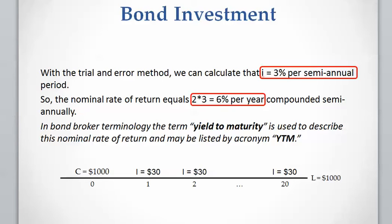So this investment — buying a bond at the present time at the price of $1,000 with a maturity date of 10 years and a coupon of $30 paid every six months — has a return of 6% per year compounded semi-annually. The 6% nominal rate of return that we calculated is also called yield to maturity, or YTM.